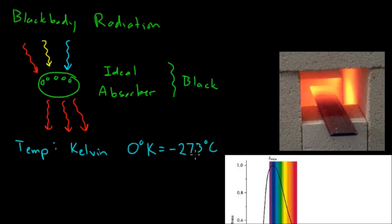That's when all the atoms in your object have completely stopped moving. And that temperature corresponds to negative 273 degrees Celsius, approximately. So all of our temperatures are always going to be in Kelvin, unless we say otherwise.